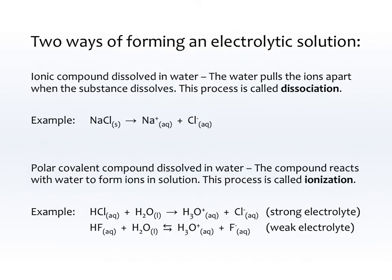There are two ways of forming an electrolytic solution. First, we have an ionic compound dissolving in water — this is called dissociation. The water pulls the ions apart when the substance dissolves. For example, NaCl turns into Na+ and Cl-, so that ionic compound is just breaking apart.